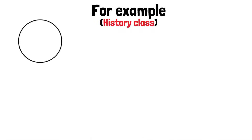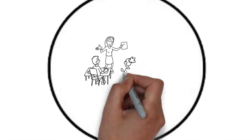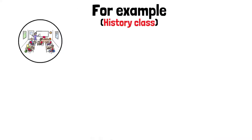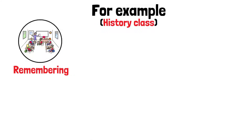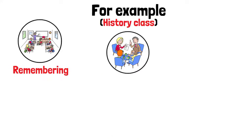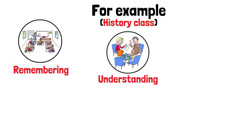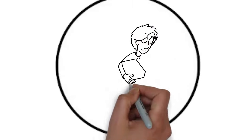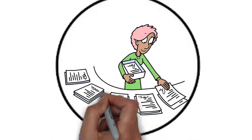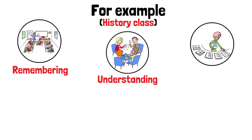For example, in a history class, a teacher might start by having students memorize key dates and events — remembering. Next, they might ask students to explain the causes of these events — understanding. Then, students could apply this knowledge by discussing how these events might have unfolded differently under different circumstances — applying.